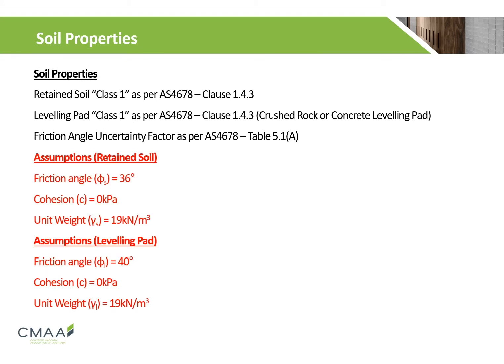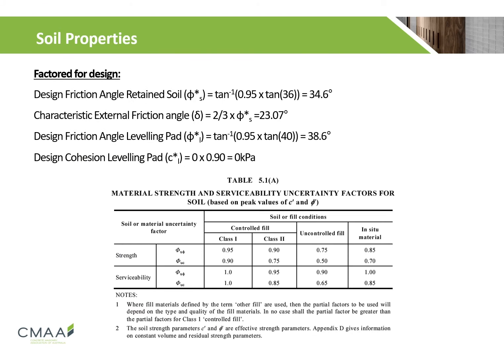For our retaining wall, the soil properties need to be determined for both the retained soil and the levelling pad, as per AS 4678 clause 1.4.3. The assumptions regarding the friction angle, cohesion, and unit weight for both retained soil and the levelling pad can be found on screen. We then need to factor our soil properties for design using Table 5.1a, applying an uncertainty factor of 0.95 to determine the design friction angle for retained soil, the characteristic external friction angle, the design friction angle for the levelling pad, and the design cohesion.